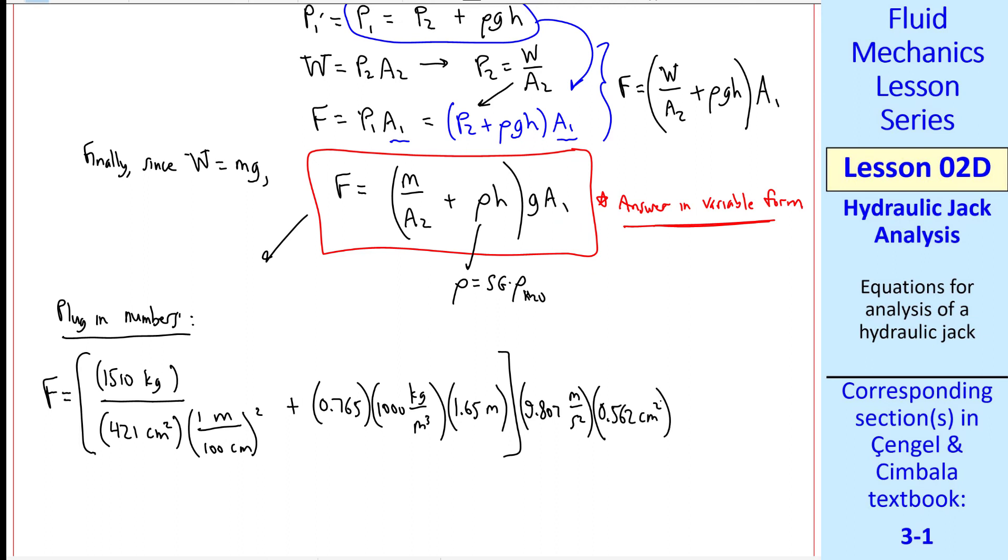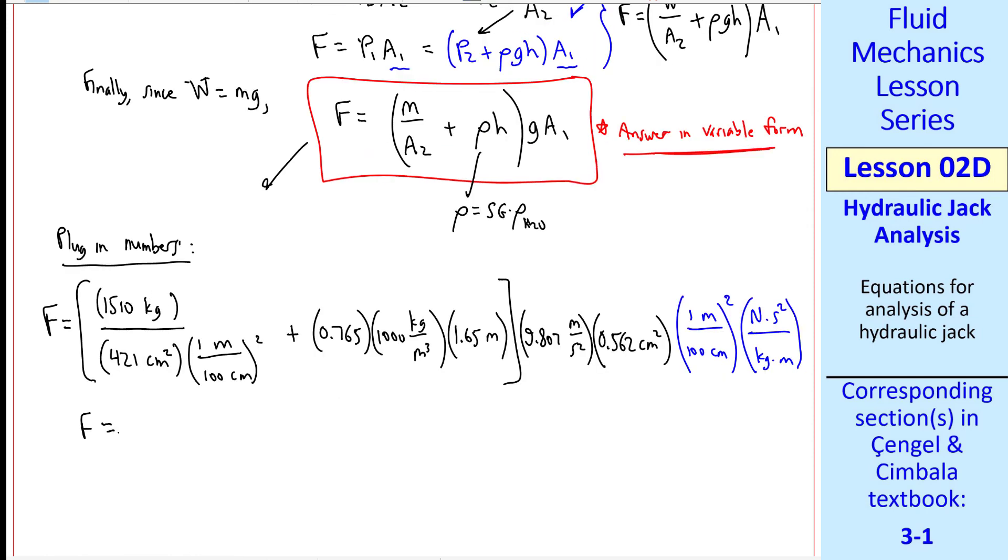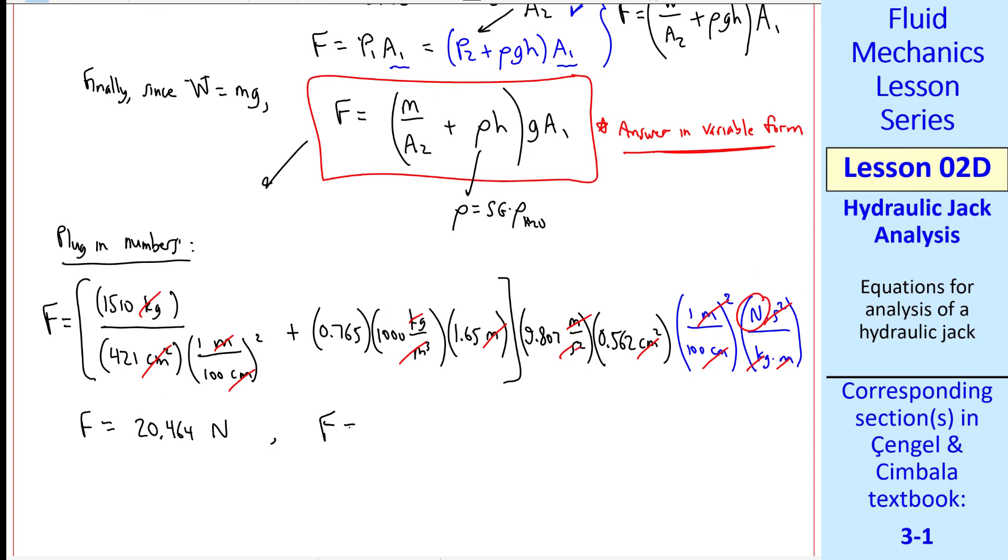And A1, 0.562 centimeters squared. We need a couple more unity conversion factors. Again, a meter is 100 centimeters, and we square that. A newton is a kilogram meter per second squared. And when we plug all this into our calculator, we get 20.464 newtons, verifying that all the units cancel out properly: centimeters, kilograms, meters, meters squared here, meters squared, and meters squared there, second squared, leaving us with newtons. Finally, to three significant digits, my numerical answer is 20.5 newtons.